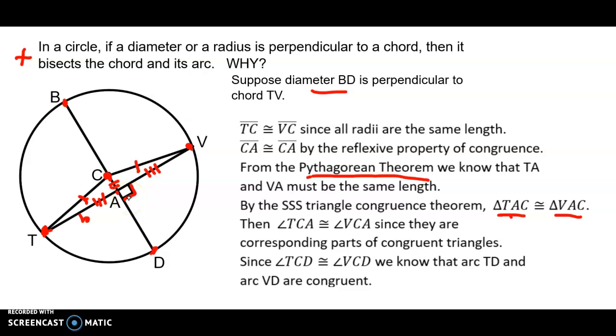We then have angle TCA congruent to angle VCA since they're corresponding parts of congruent triangles. But since those central angles, well, TCA is really the same as TCD and VCA is really the same as VCD.